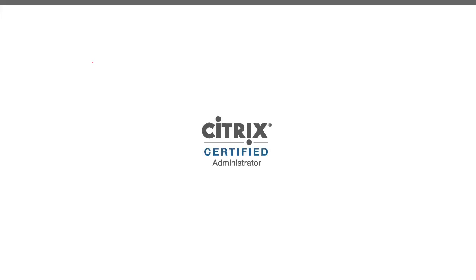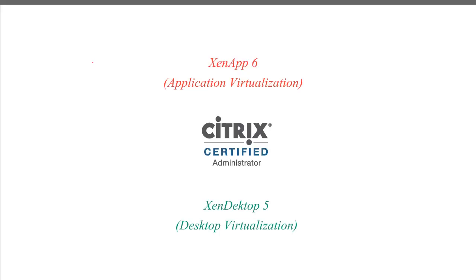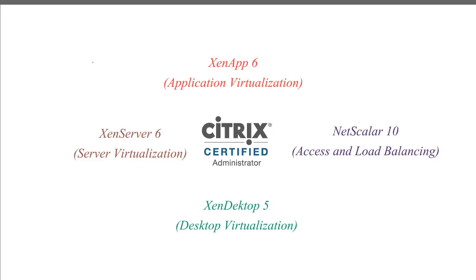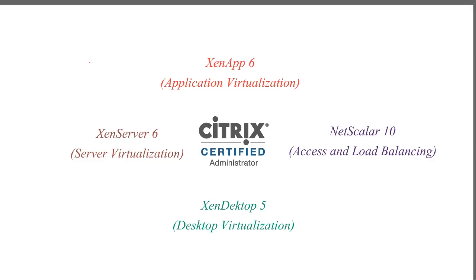There are four main tracks that you can achieve for the CCA. The first is the application virtualization track called XenApp. All of their products that start with an X are actually pronounced with the letter Z in front. The second track is desktop virtualization called XenDesktop. The third is the server infrastructure track called XenServer. The fourth is the NetScaler track, which deals with access and load balancing. Each track requires only one test to pass to become a CCA in that particular product.